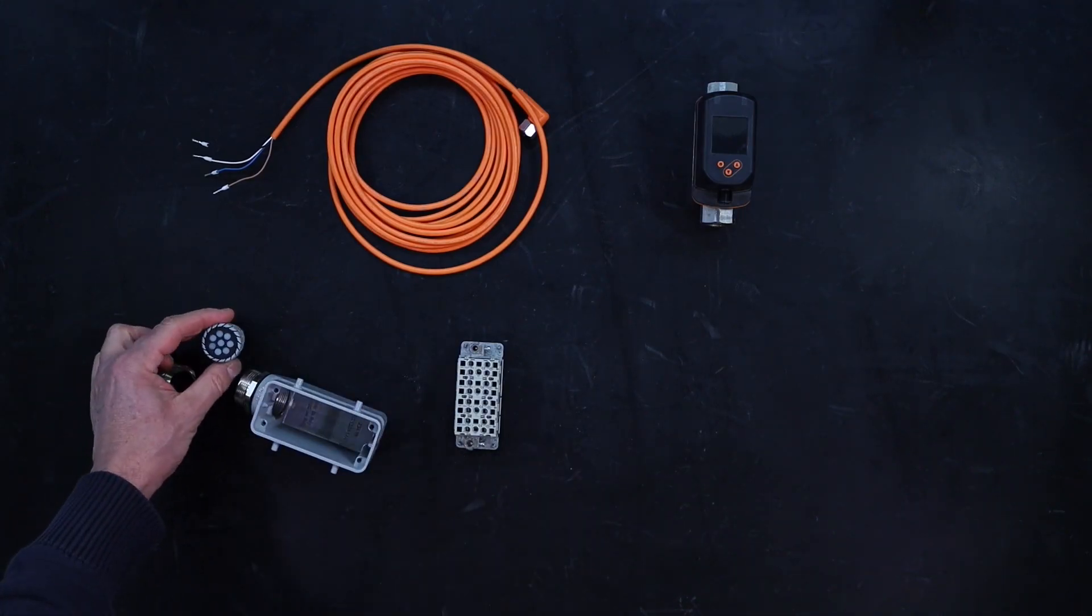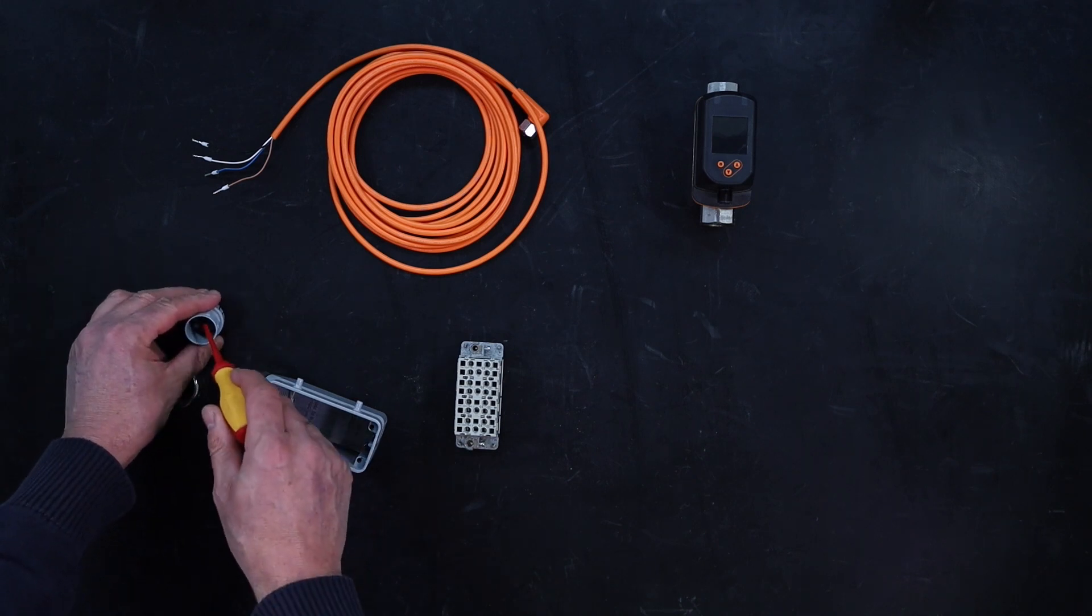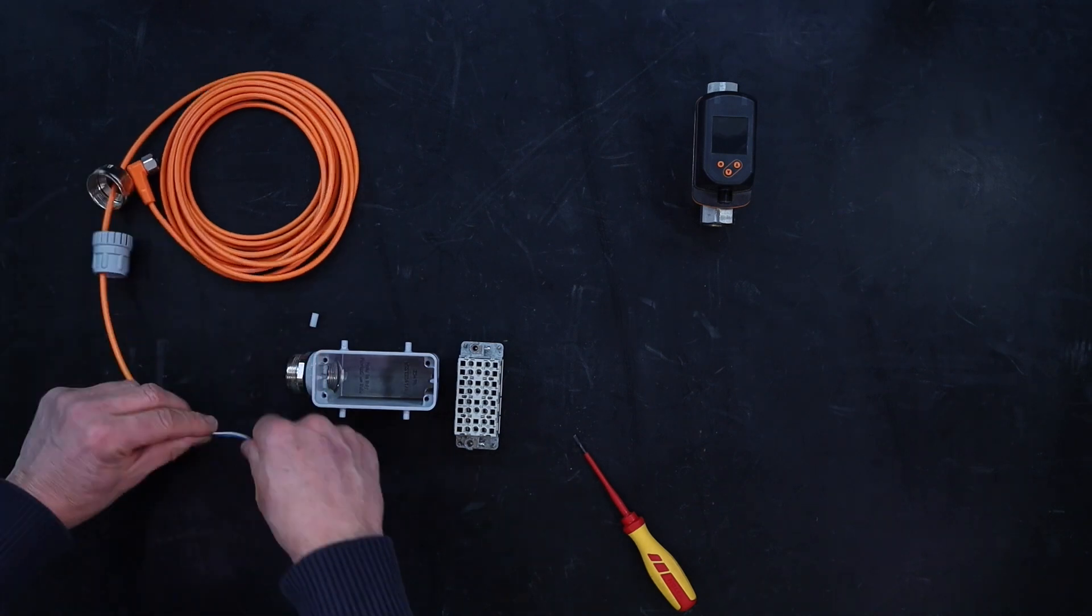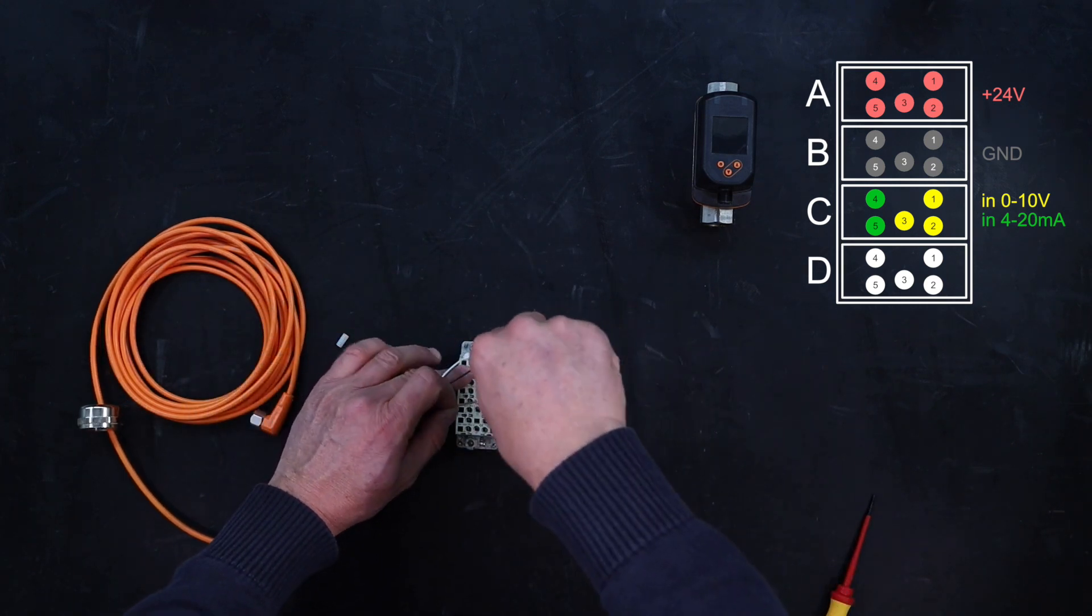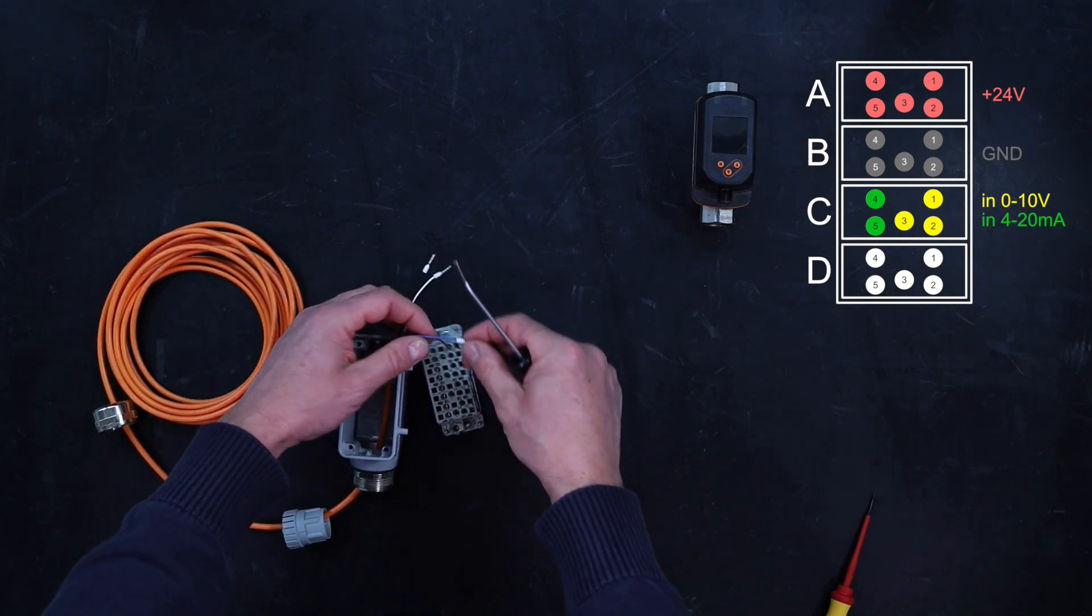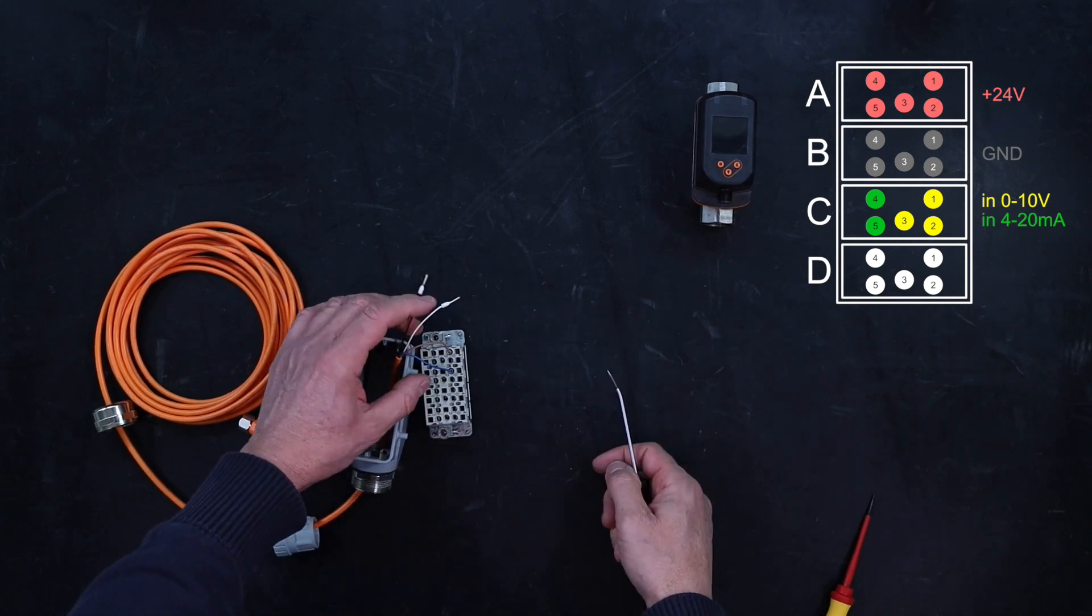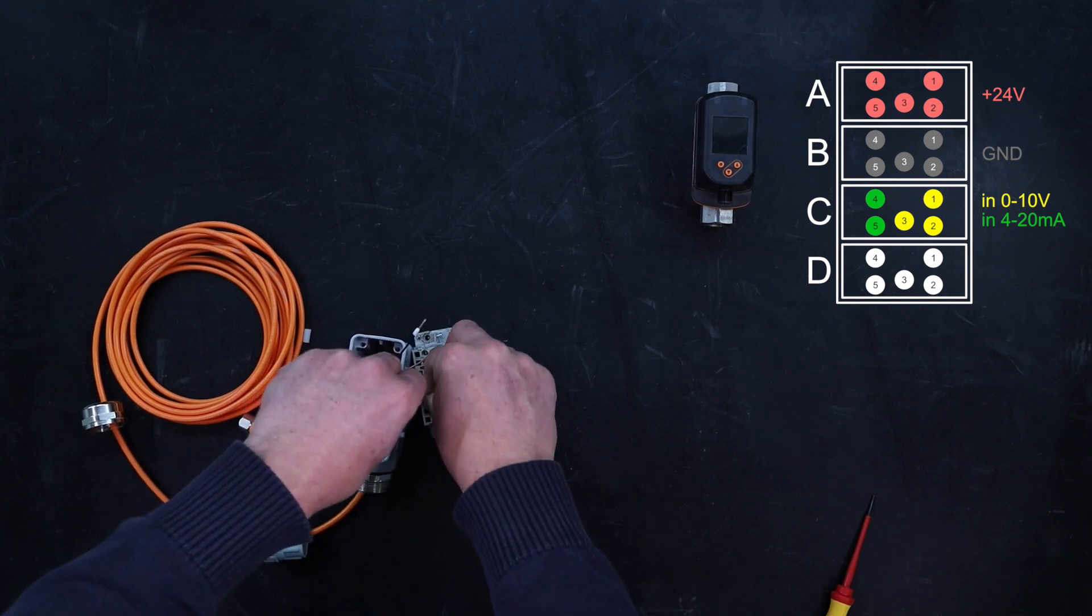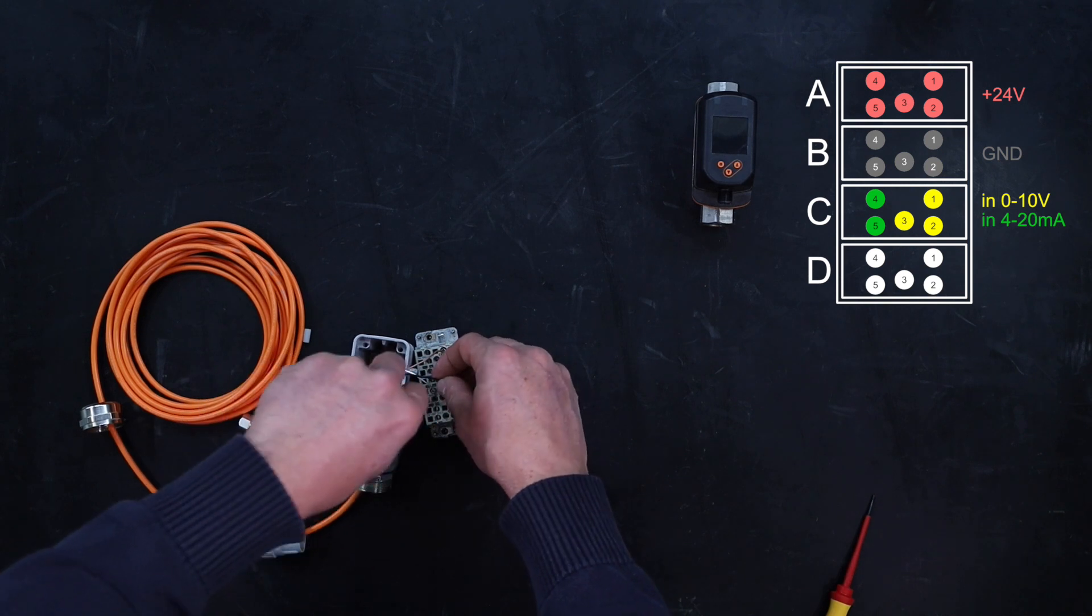You have to disconnect one of these pins. Then you can insert the cable into the housing for the sensor. The brown cable is for the plus 24 volt DC on block A. The blue one is for the ground on block B. The white one for the flow rate connected to block C, terminal 4. The black one for the temperature connected to block C, terminal 5.